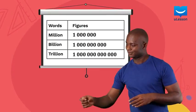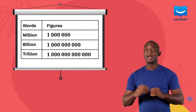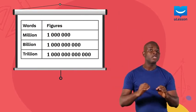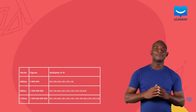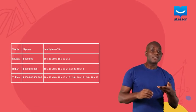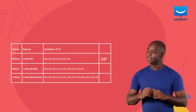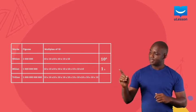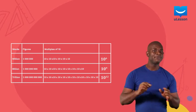Can you recall our lesson on large numbers? Each of these numbers can be expressed as multiples of 10 as displayed in the table. We can also go further to express the numbers in index form as 10 power 6, 10 power 9, and 10 power 12 respectively.